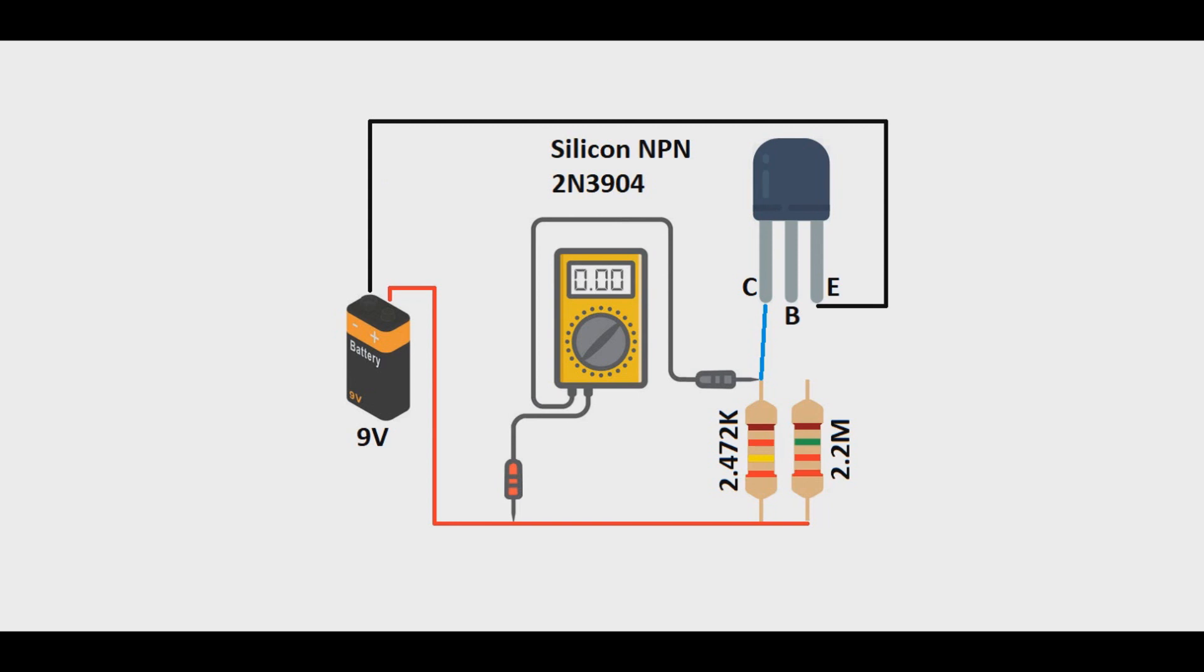When the base pin is left disconnected on the transistor, as shown here, we took a voltage readout on the collector resistor, and we got a voltage reading of zero. This indicates that there is practically no leakage, unlike its germanium brethren. This is one reason why in modern electronics, silicon transistors replace germanium ones.